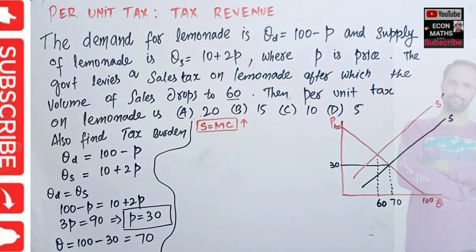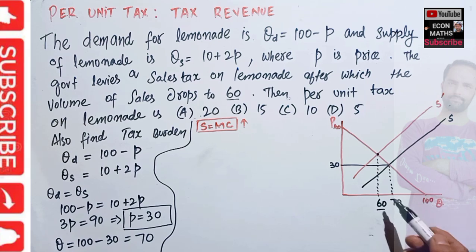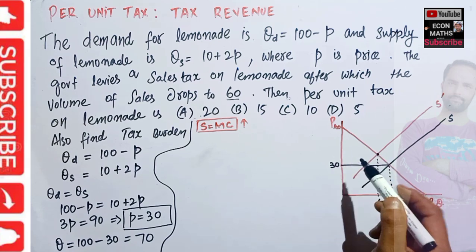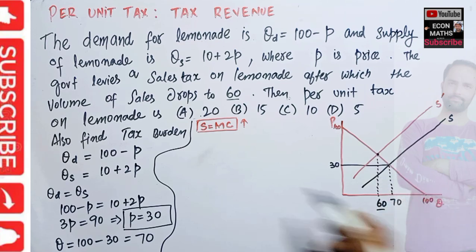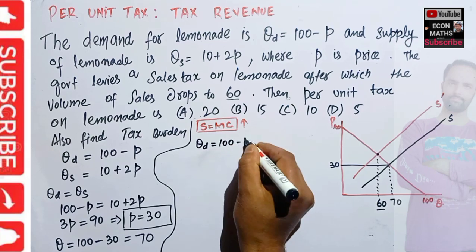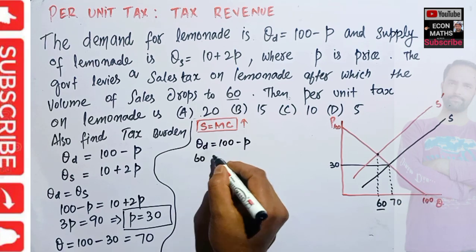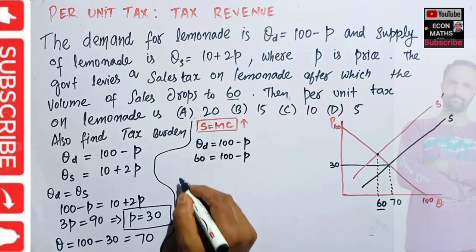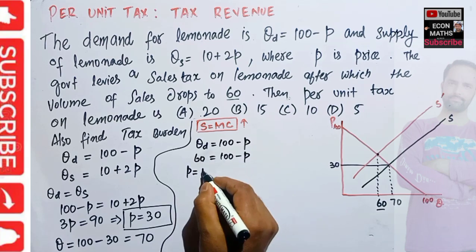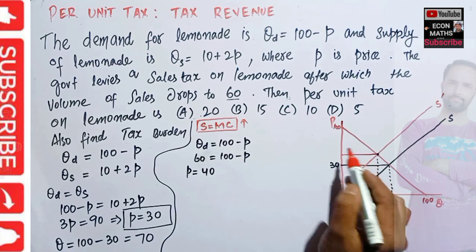The volume of sales has dropped to 60. To find the new price that the consumer will pay, we use the demand function QD = 100 minus P. Substituting Q = 60: 60 = 100 minus P, which gives us the new consumer price P equals 100 minus 60, which is 40.